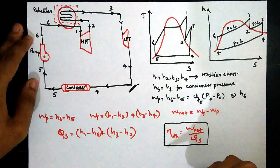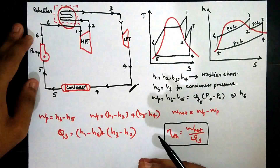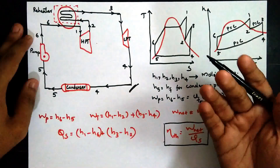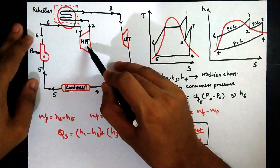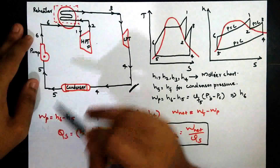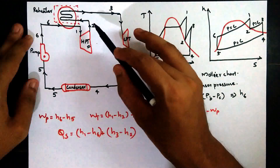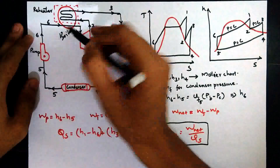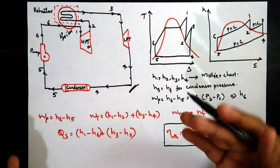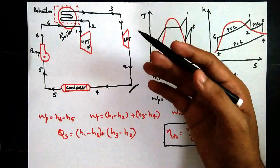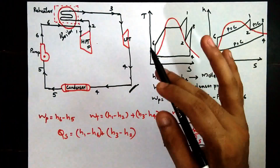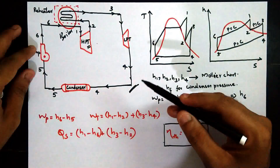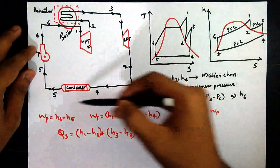Heat is supplied to the steam in the boiler, and it is converted into superheated steam. This high pressure superheated steam enters the high pressure turbine. The outlet of the high pressure turbine goes back to the boiler reheater, where it is reheated — that is, heat addition at constant pressure. Then the steam enters the low pressure turbine, and the outlet of the low pressure turbine goes to the condenser. The process is then repeated.